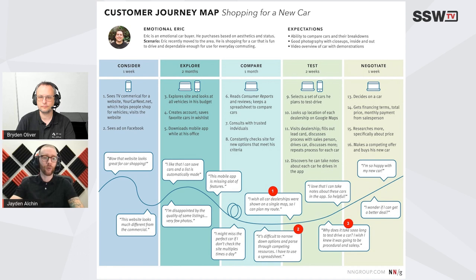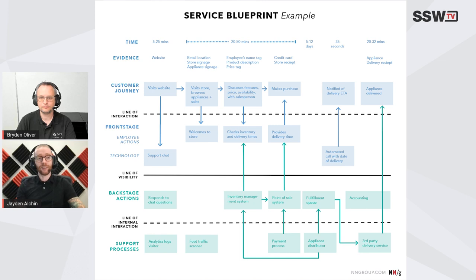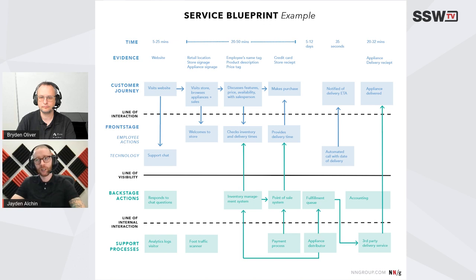There's another sort of map called a service blueprint — do you want to take us through one of those? Sure. Here we have a service blueprint. As you said, it's similar but different — it's a little more process-oriented than user-oriented. There are lots of lines and boxes, and you can see the customer journey is just one lane at the top.